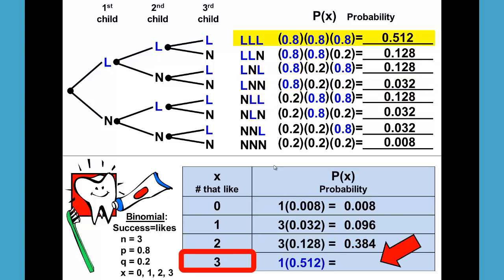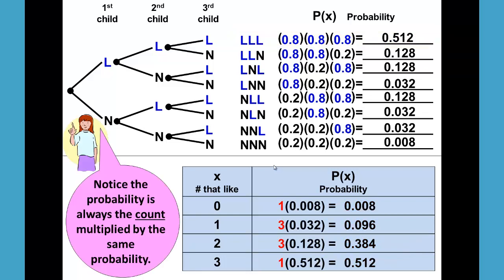Next we get three likes, one way to do that, and 1 times 0.512 which is 0.512. Notice again that it's the count multiplied by the same probability, the count and the probability.